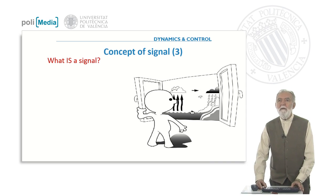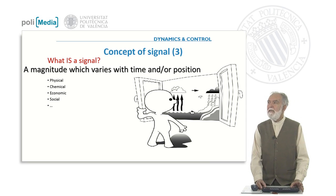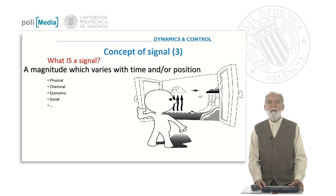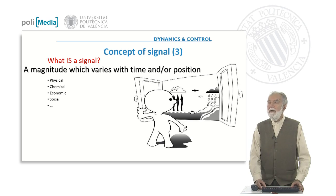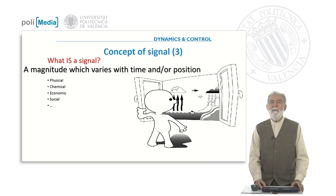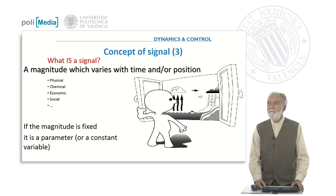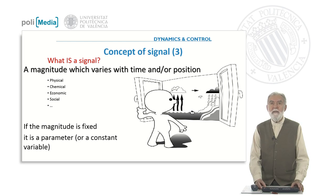So, in conclusion, what is a signal? A signal is a magnitude which varies with time and/or position. What is important is that this magnitude could be a physical one, a chemical one, an economical one, a social or a psychological one, as we saw in some examples. So we can conclude that a signal is a magnitude which varies with time, and if the magnitude is fixed, we will consider this like a parameter or a constant variable.